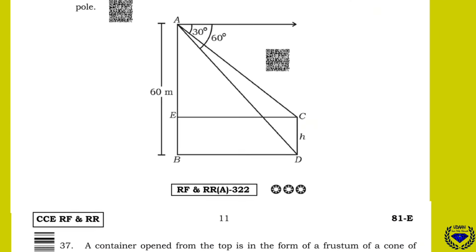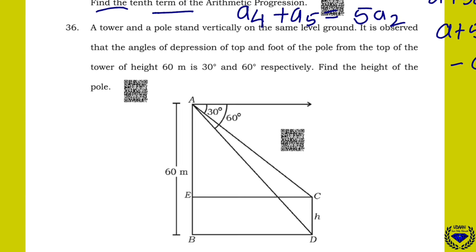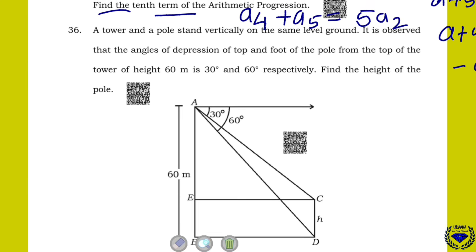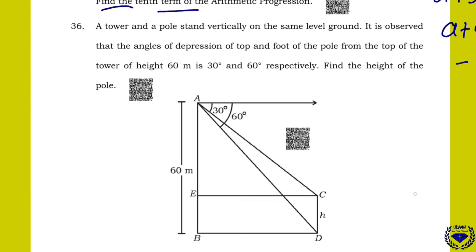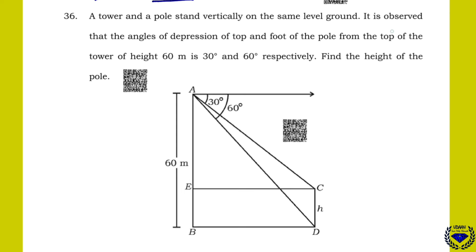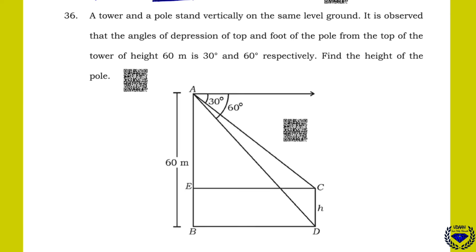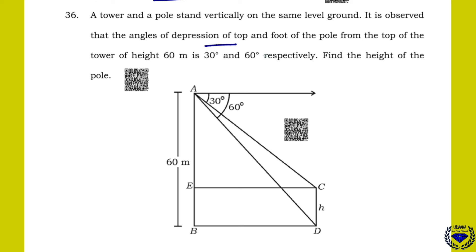Now moving on to the next question. A tower and a pole stand vertically on the same level ground.